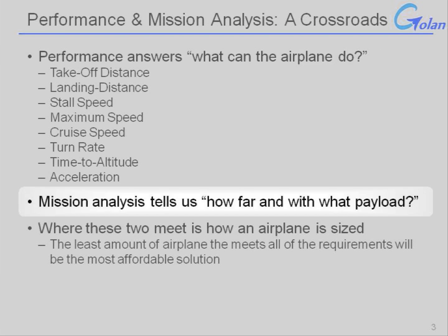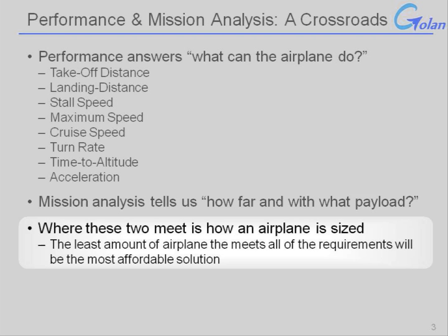Mission analysis, on the other hand, tells us how far and with what payload the aircraft can travel. You could have two aircraft that meet very similar performance specs — for example, a 737 and a 747 — that might have similar requirements in terms of takeoff and landing distance, but will have radically different requirements in terms of mission performance and range. And where the performance and mission requirements cross, that's how the airplane is ultimately sized.